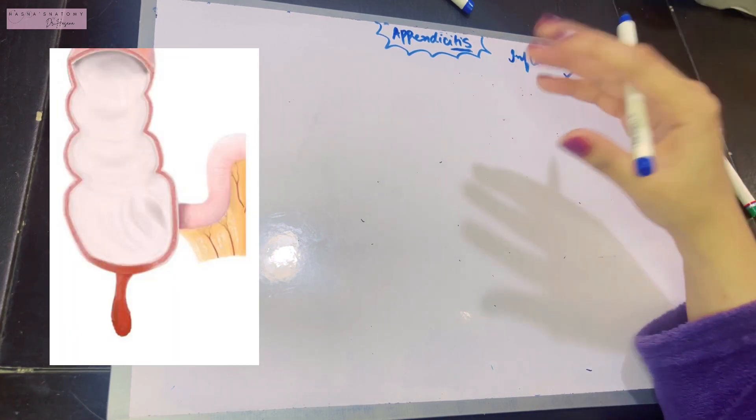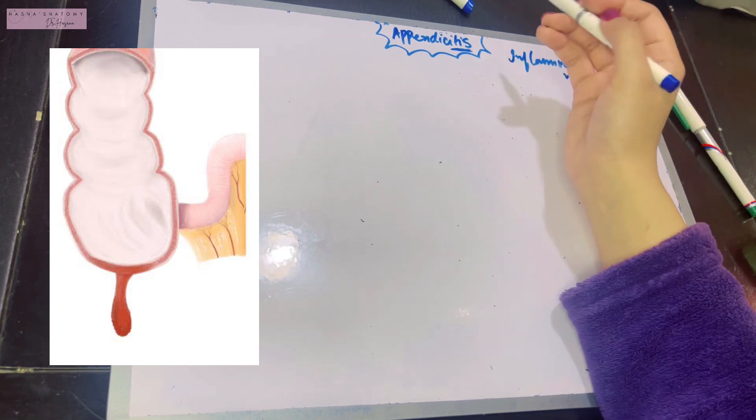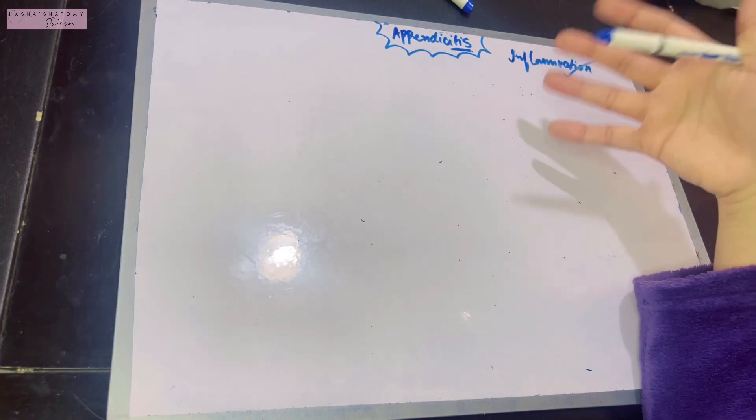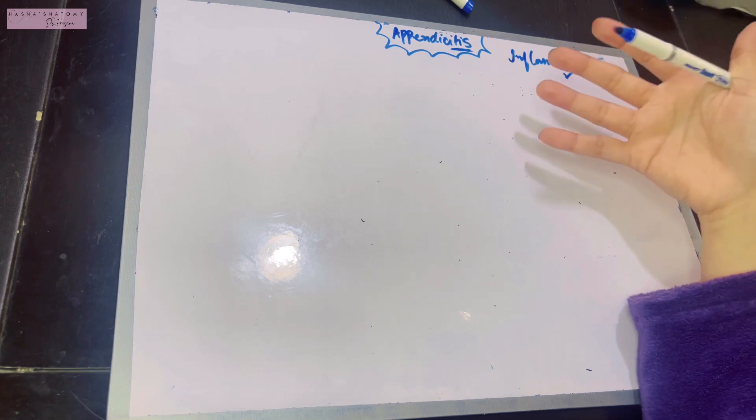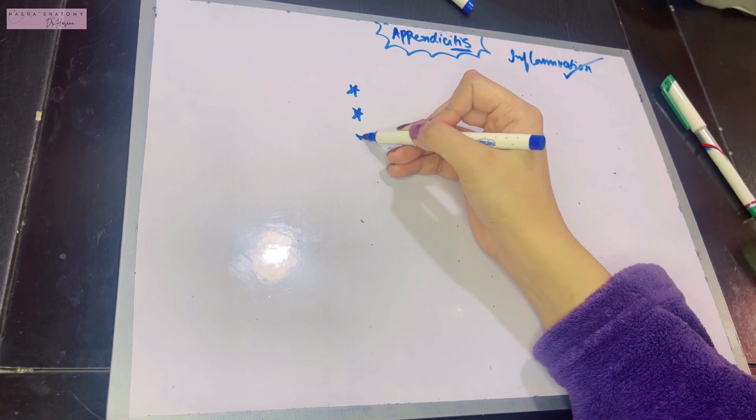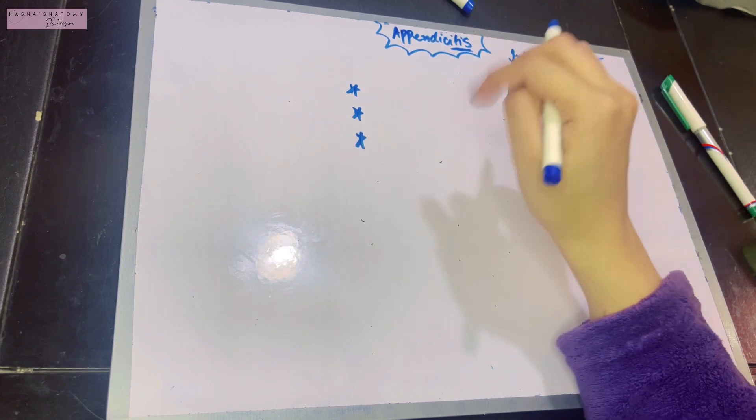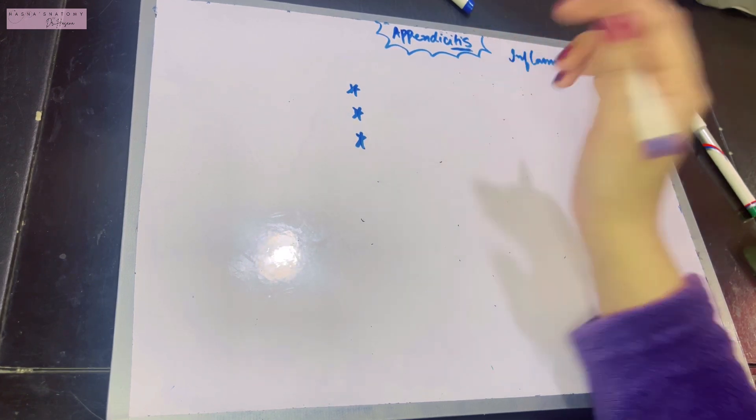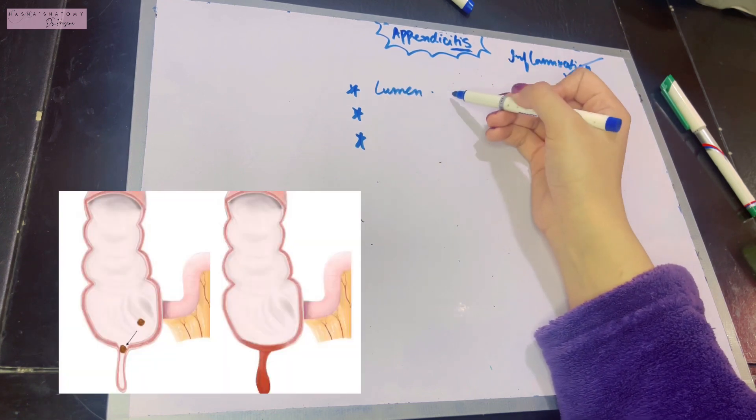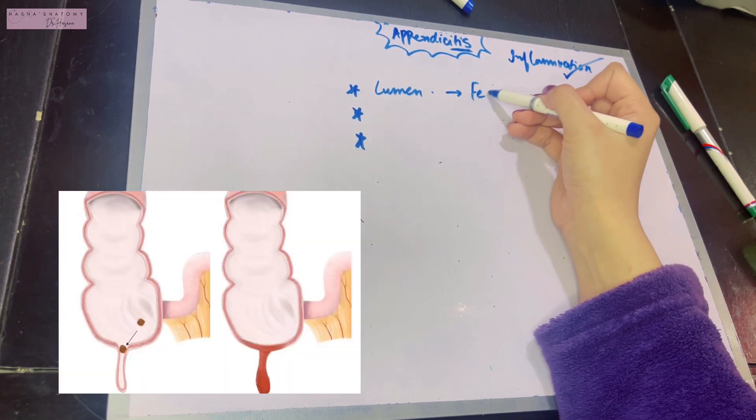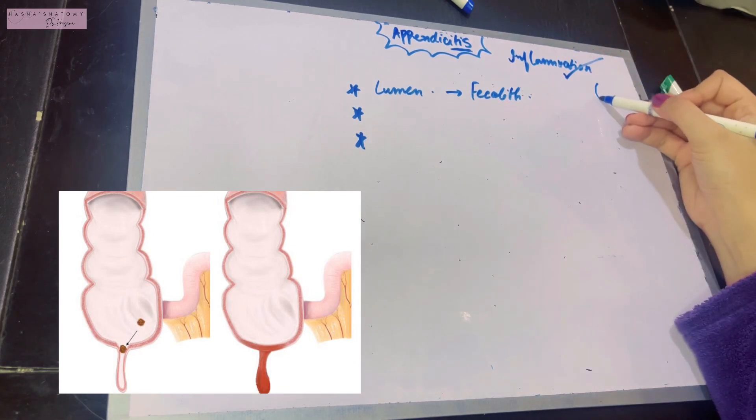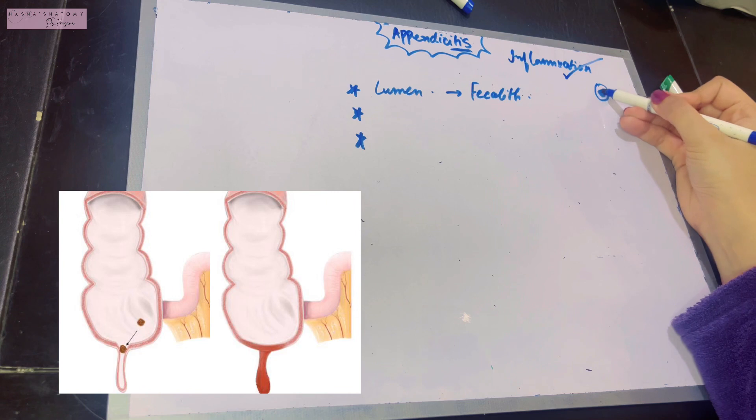Let's talk about the factors that produce appendicitis in the first place. There are three factors. The first factor is that the appendix has a very narrow lumen. This narrow lumen results in what's called a fecalith. The fecalith is basically fecal matter from the cecum that gets very hardened.